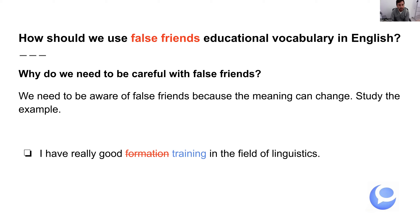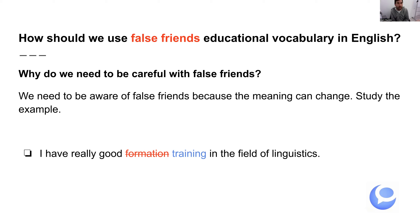I have really good formation in the field of linguistics. Formation is a false friend. Formation does exist in English — it refers to the lineup of a football team, the eleven players who start a match, or the shape something takes — but it does not mean academic training or learning something. So the correct sentence is: I have really good training in the field of linguistics.